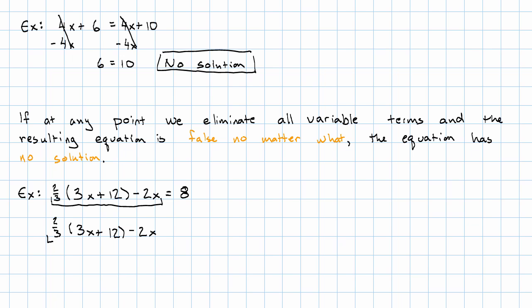Simplify this first term by distributing the 2 thirds. So we have 2 thirds times 3x plus 2 thirds times 12 plus copy the negative 2x.